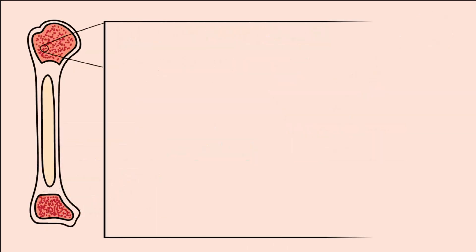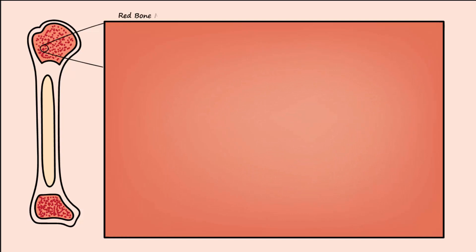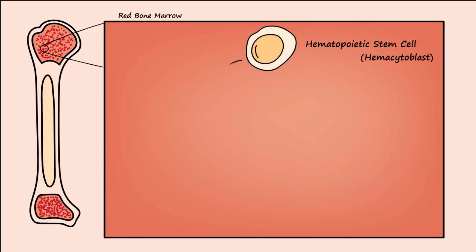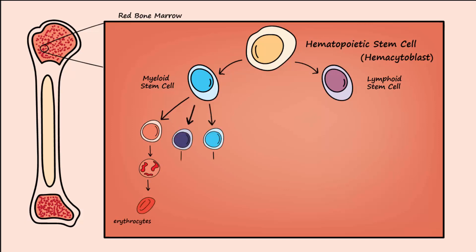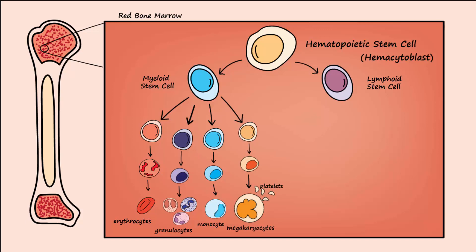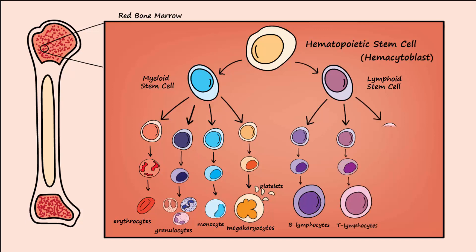Inside the red bone marrow are hematopoietic stem cells that differentiate into either myeloid stem cells or lymphoid stem cells. Each of these stem cells then goes on to divide into different types of blood cells. Myeloid stem cells are the precursor cells for erythrocytes, granulocytes, monocytes, and platelets. The lymphoid stem cell is the parent cell for B lymphocytes, T lymphocytes, and natural killer cells.